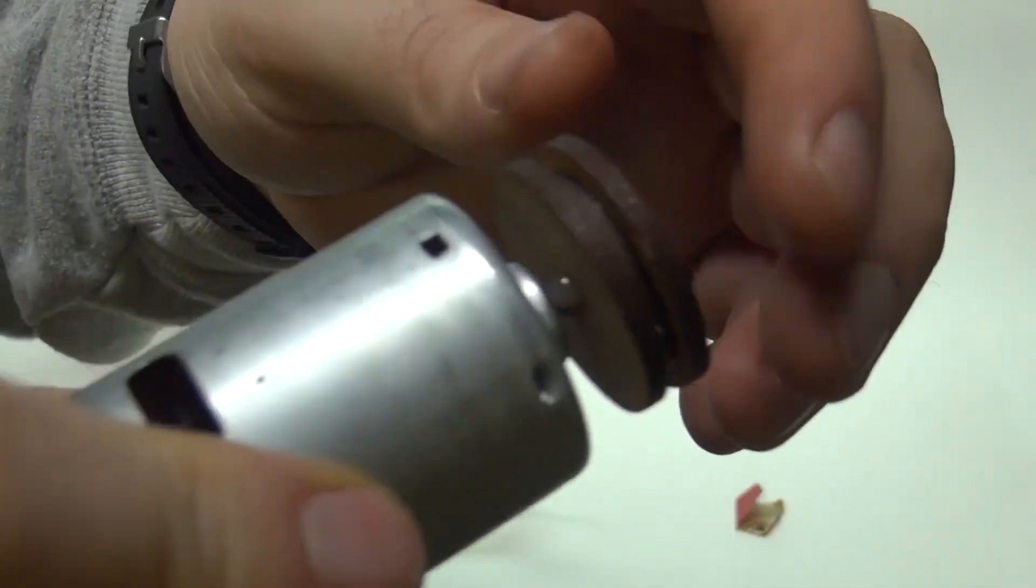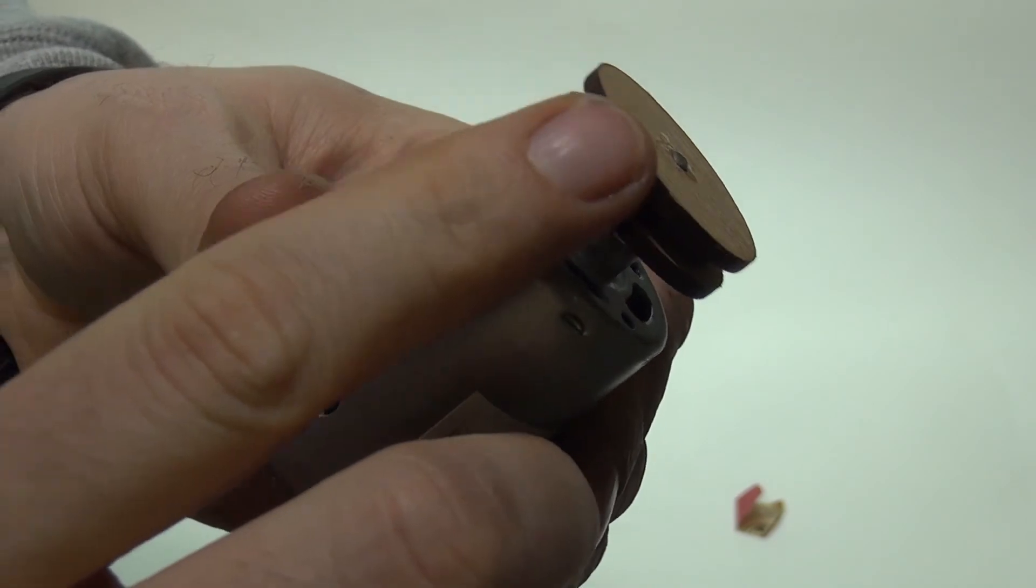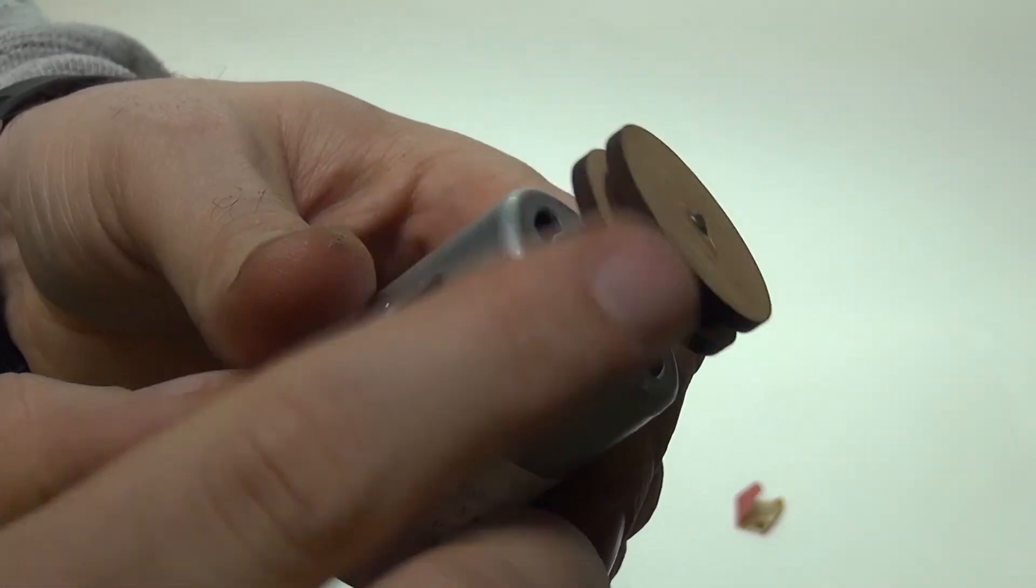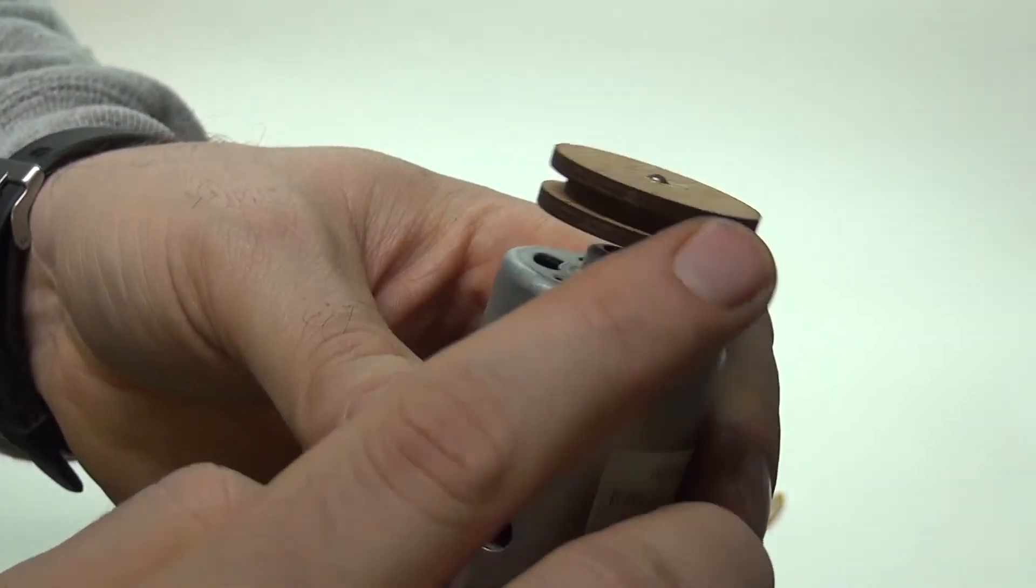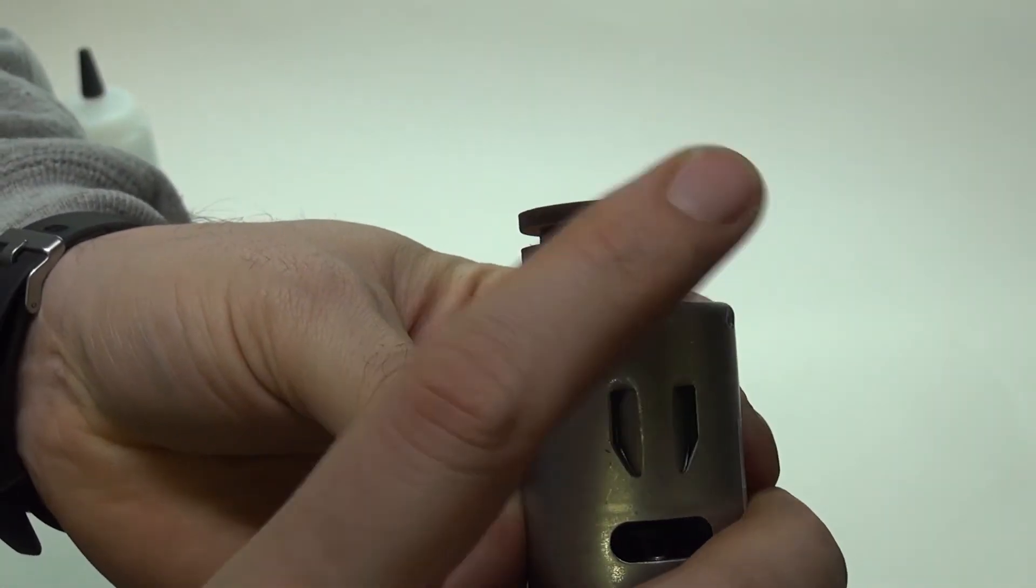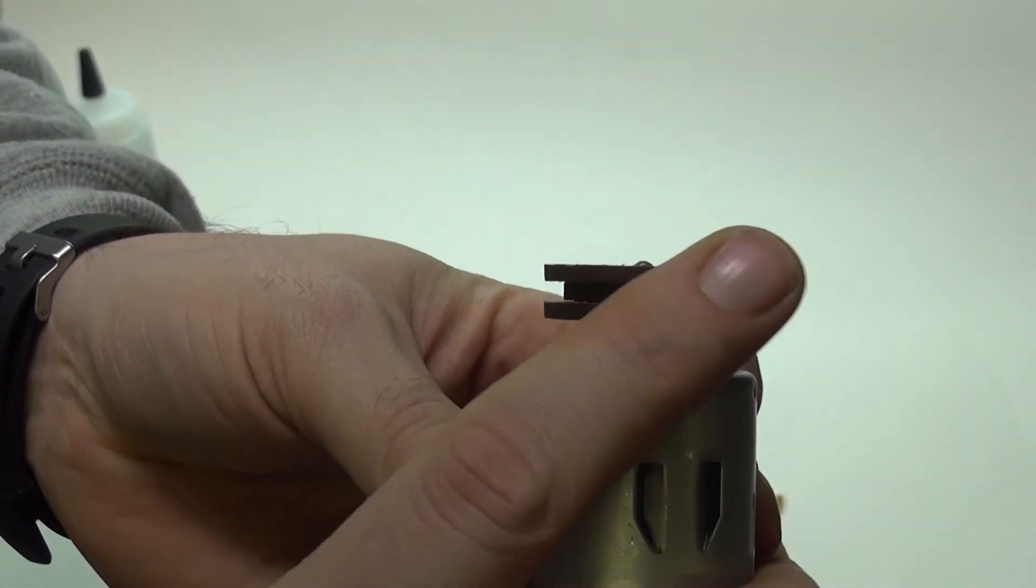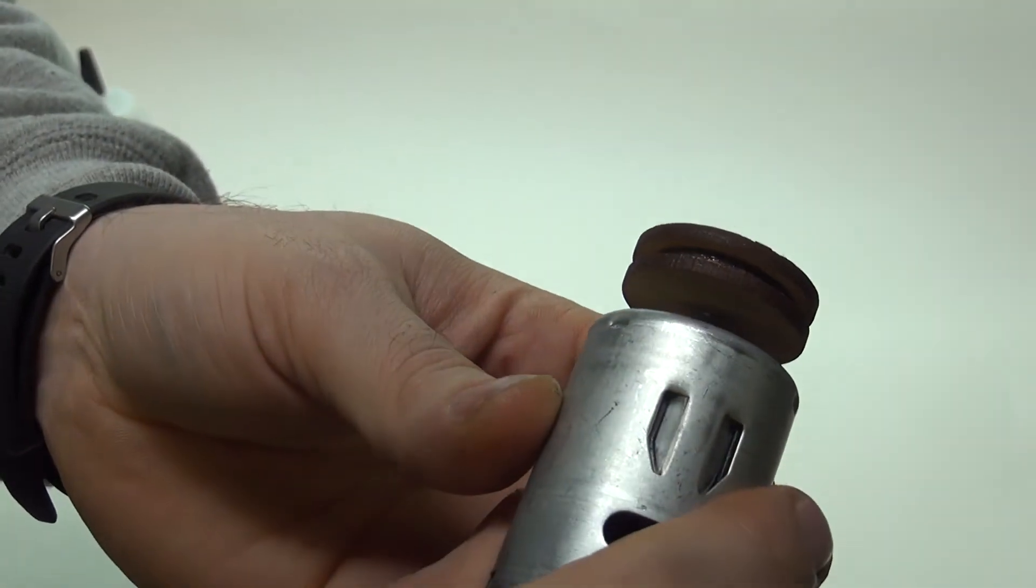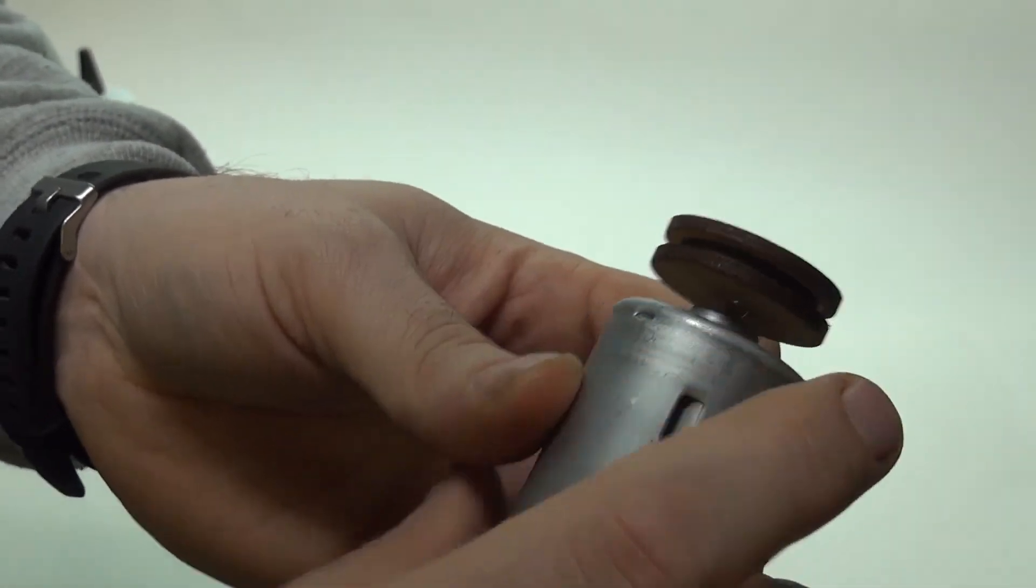That's pretty much all you have to do. You do want to check that it's on there pretty straight. The best way to do that is to spin it a little bit and look at it while you're spinning it to make sure that it's not on there crooked or anything. This one looks like it's good.